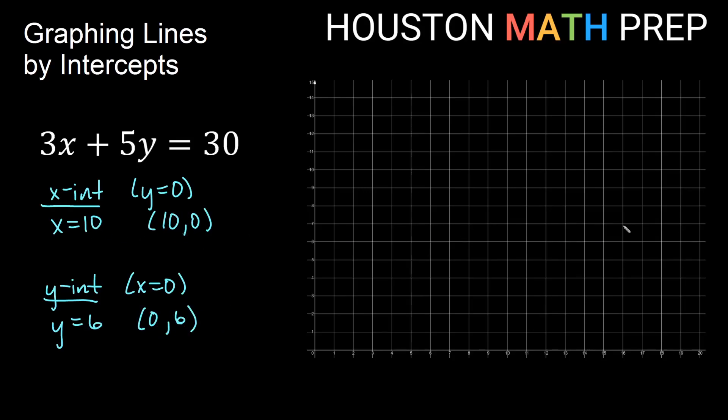Plotting these: 10 comma 0 at positive 10 on the x-axis, on our horizontal axis here along the bottom if we're only using the first quadrant. And on the left side of our graph, our y-axis, at 6, 0 comma 6 would be up 6 from the origin. Now we can simply plot our line through these points and that is our graph of 3x plus 5y equals 30.